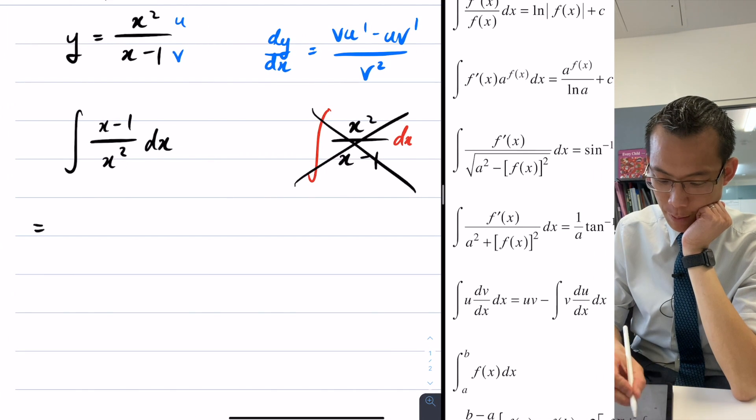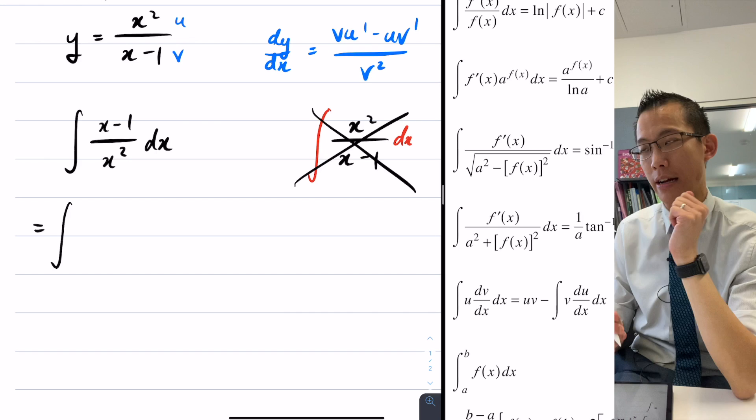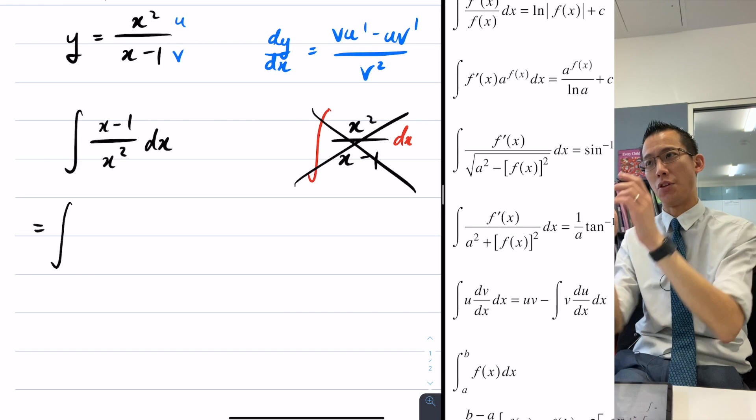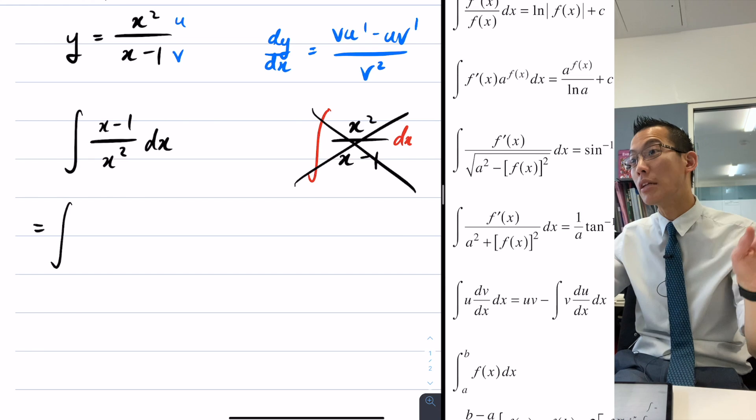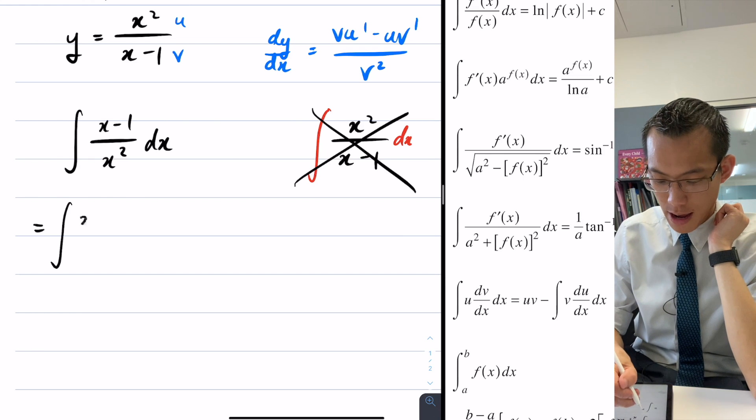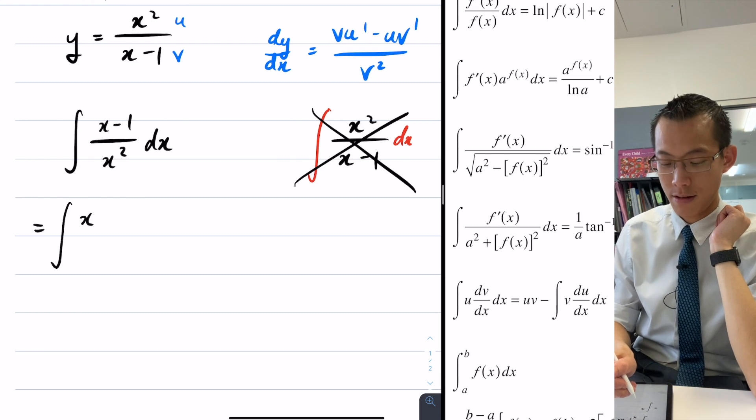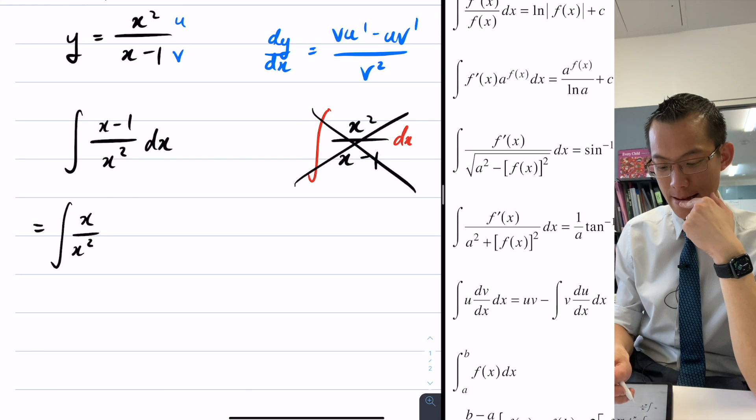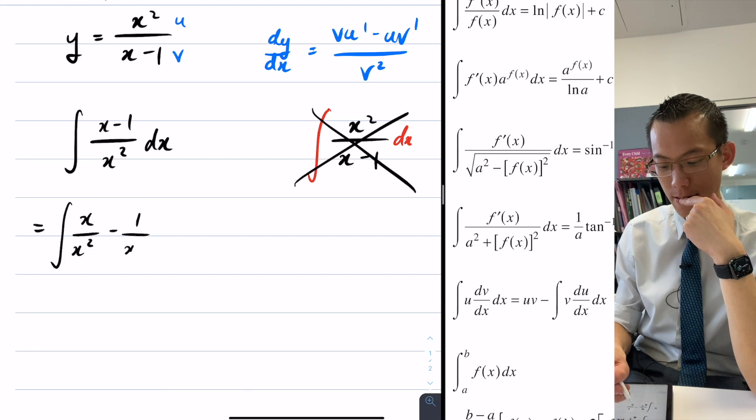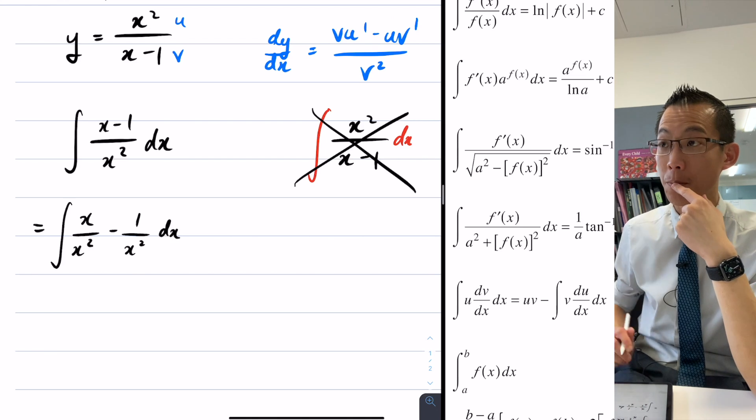I'm gonna pick back up over here. The first thing I'm going to do is, as I'm integrating, the numerator, the x and the negative one, I'm actually going to treat them as completely separate. So what I'm going to do is I'm going to write x over x squared, and then I'm going to take away one on x squared like so.